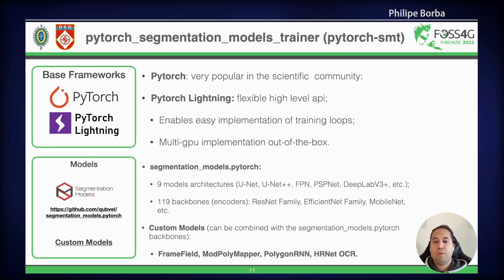SegmentationModelsPyTorch has 119 backbones, such as those from the ResNet family, the EfficientNet family, and MobileNet. We also implemented some custom models that can be combined with backbones from SegmentationModelsPyTorch. These models were the FrameField Model, PolyMap, PolygonRNN, and HRNet OCR.